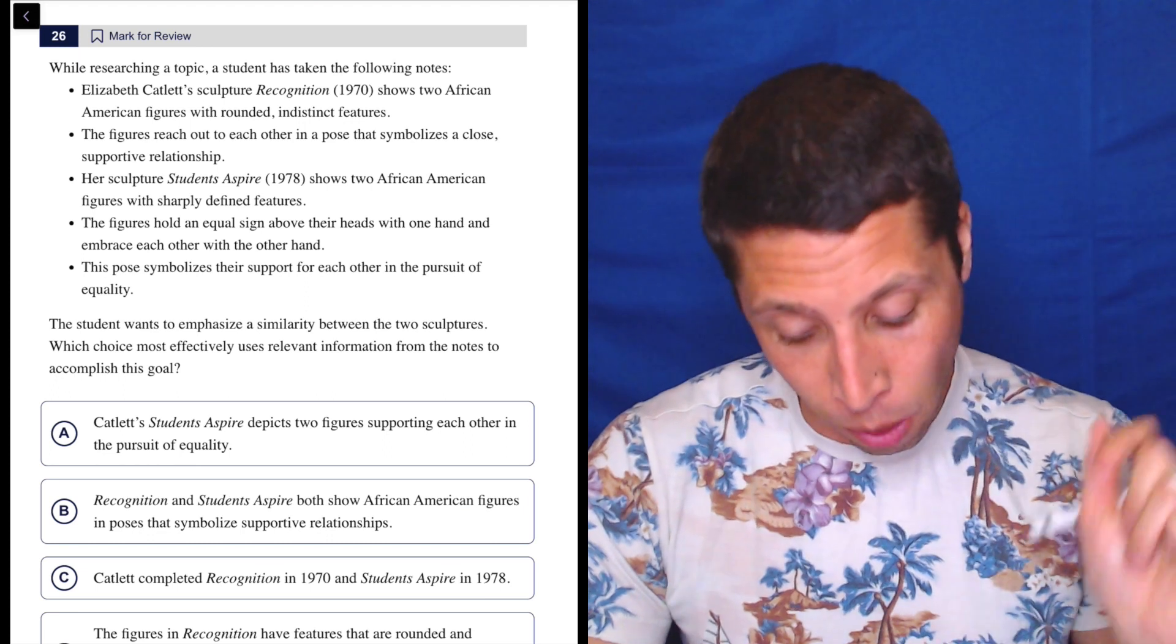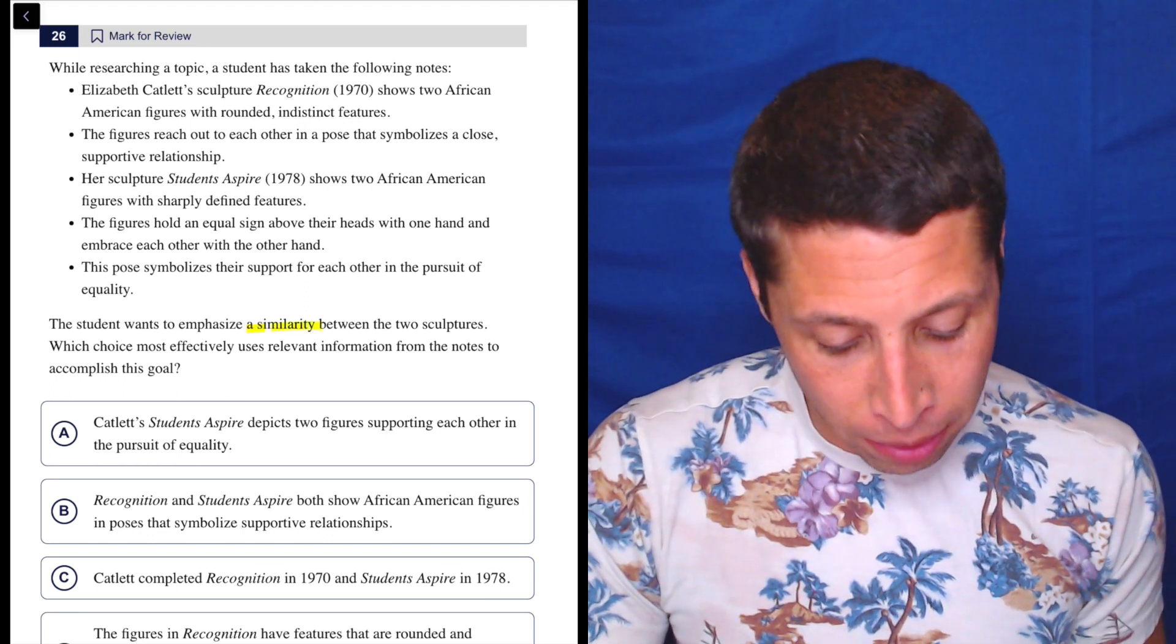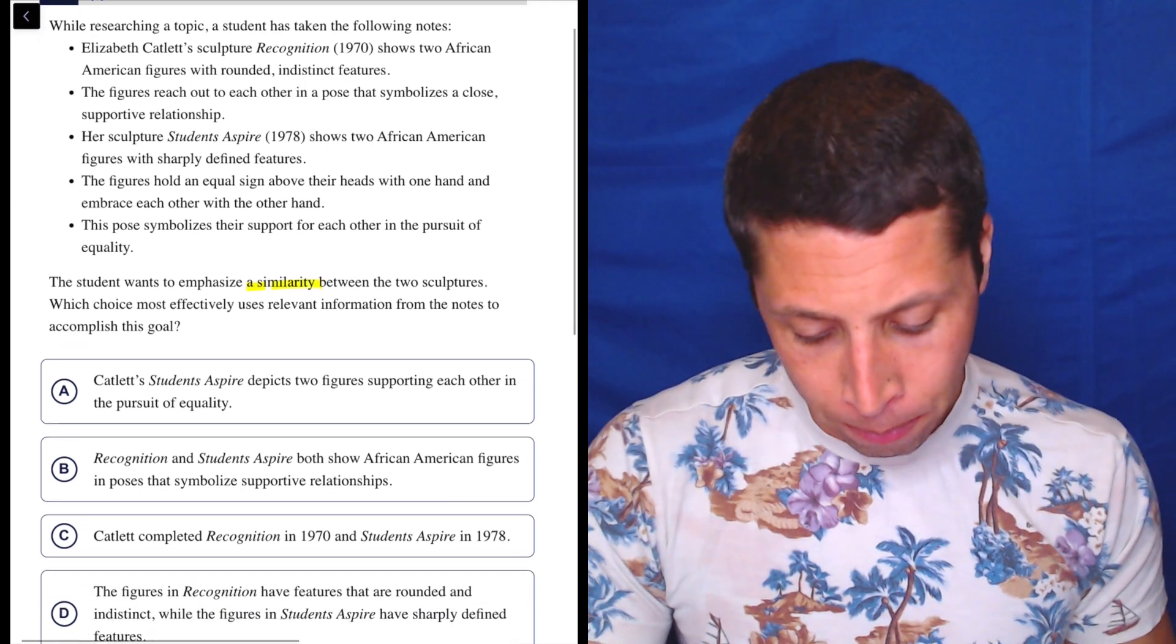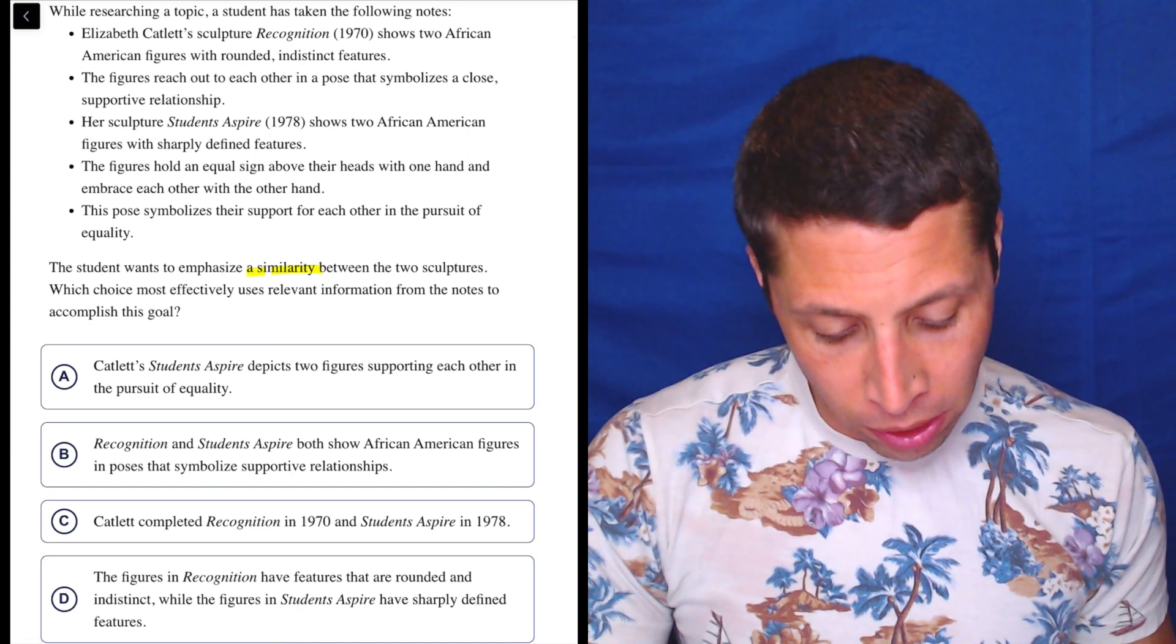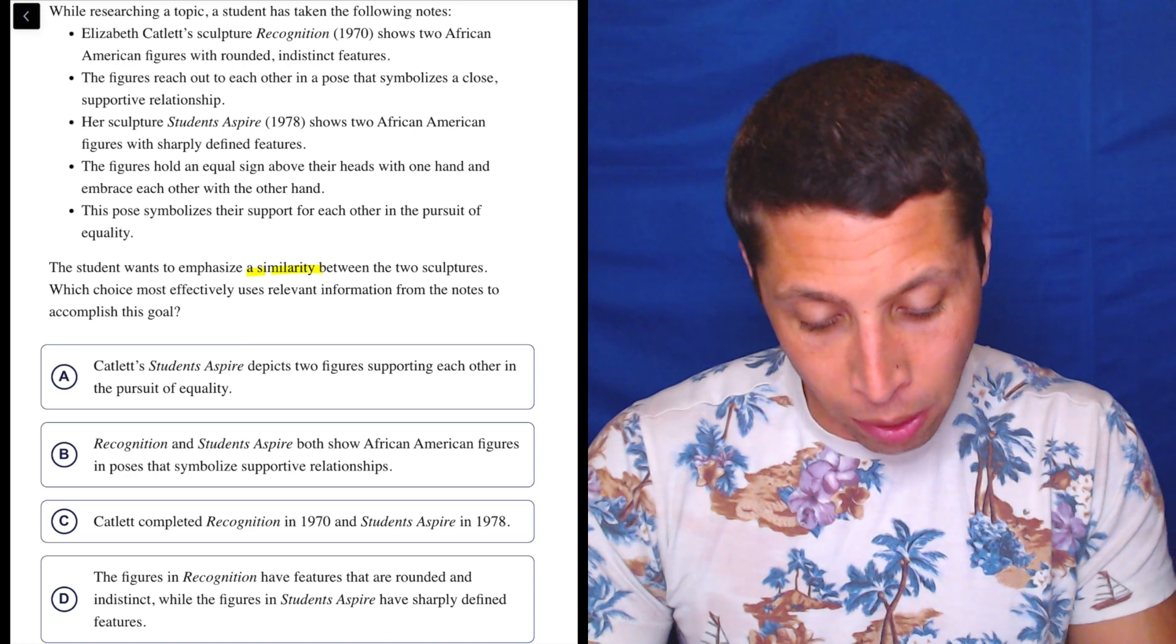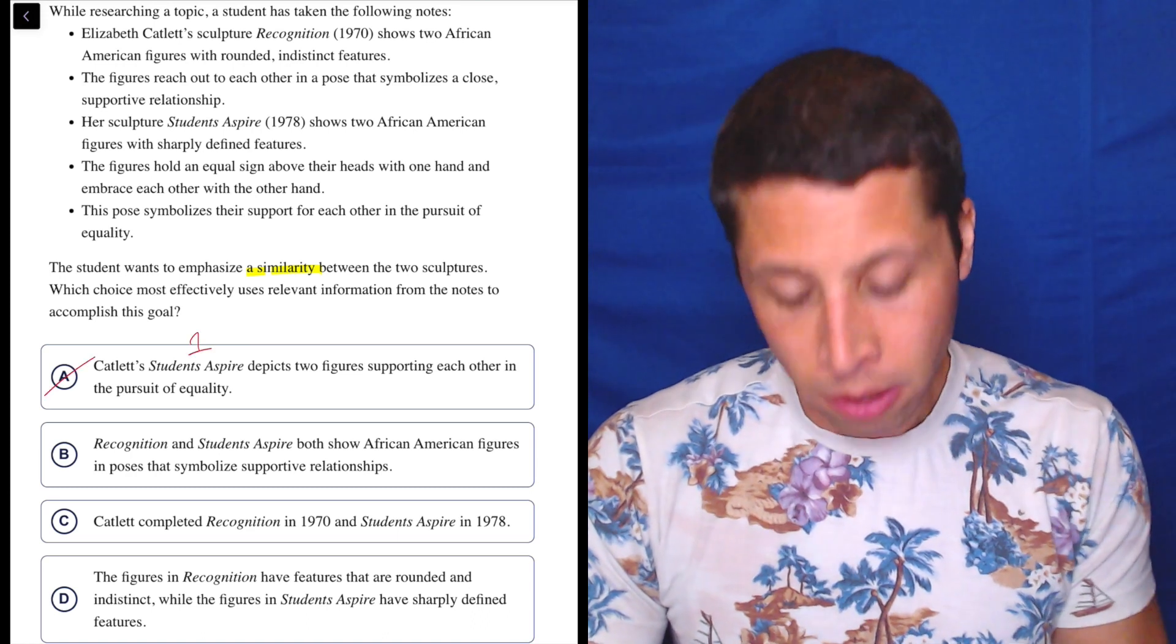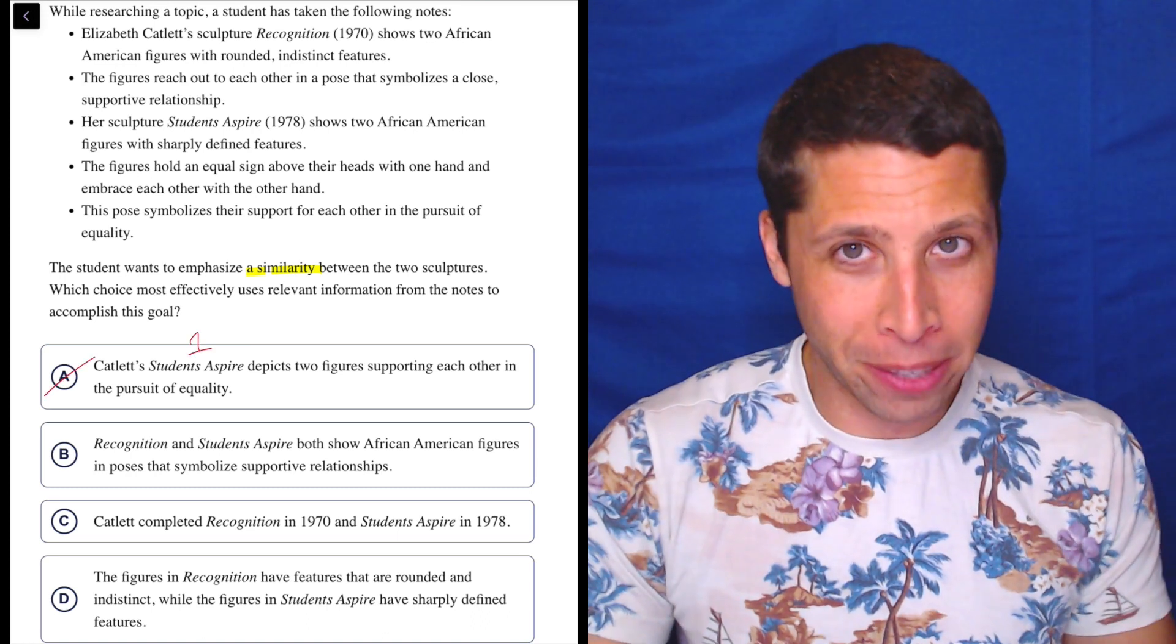Ignore the outline—what do they want? The student wants to emphasize a similarity between the two sculptures. Okay. Catlett's Students Aspire depicts two figures supporting each other in the pursuit of equality. Well, this is one sculpture, so no good. How do you have a similarity if it's just one sculpture?